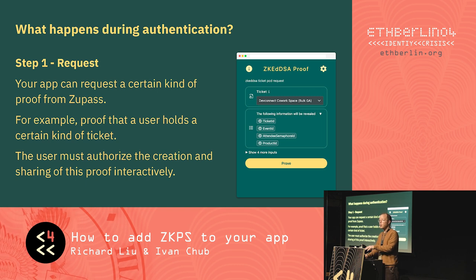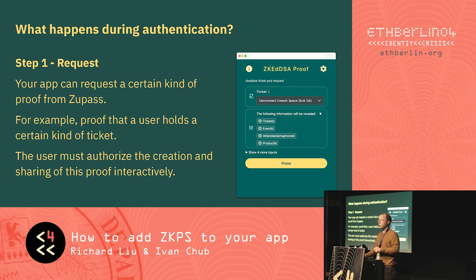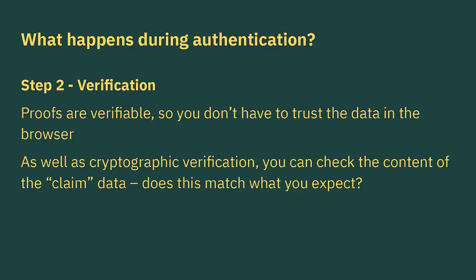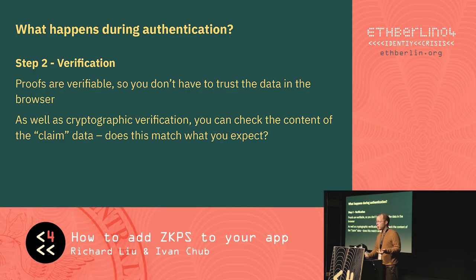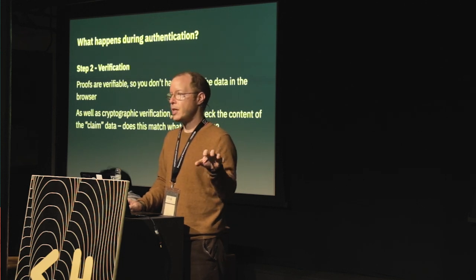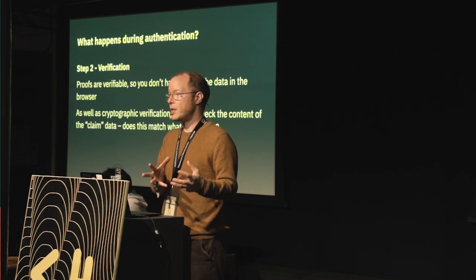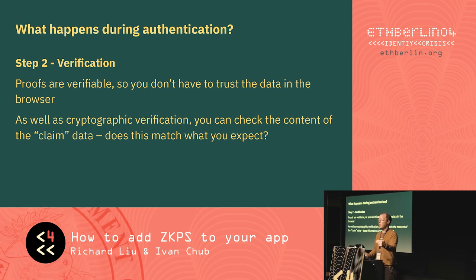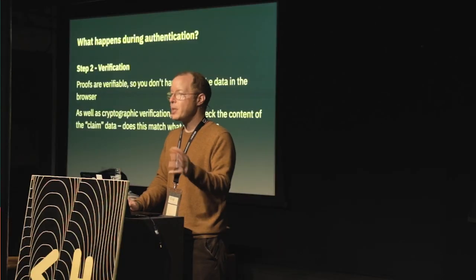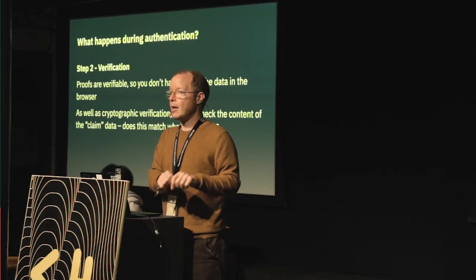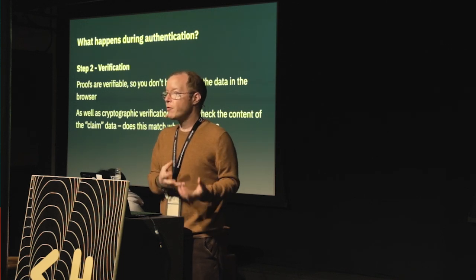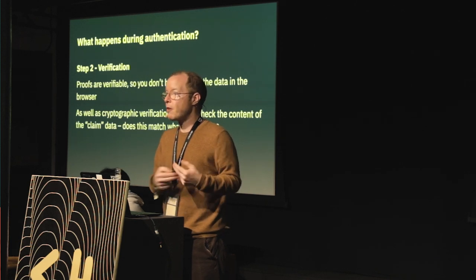Importantly, this is an interactive process — the user must approve this. No data will ever be shared out of ZooPass without the user having approved it. The user has to click the prove button for this to work. Then once you have the response back from ZooPass, you verify it, and this has two parts. One is a cryptographic verification — you get a claim, for instance: I have a ticket, my name is this, the event ID is this, the product ID is this. You get a proof, and we cryptographically verify that the proof matches the claim. This is a data integrity check — we're checking that nobody's tampered with that data. If you change any details in the claim, it would no longer match the proof.